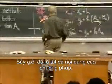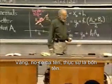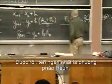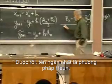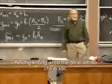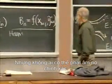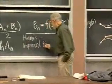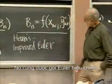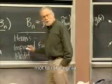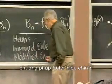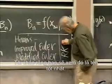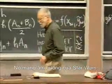Now, that's all there is to the method, except I didn't give you its name. It has three — actually four names. The shortest name is Heun's method, but nobody pronounces that correctly. It's also called the improved Euler method. It's also called modified Euler's method — a very expressive name.